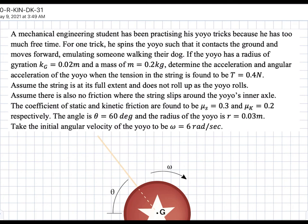In this question, we have a yoyo spinning at a given omega with a given tension. We're not sure if it's either slipping or rolling without slipping on the ground, so we have to test that. We are asked to find what the angular acceleration and linear acceleration are of the yoyo. We're also given all the friction coefficients and the angle theta.